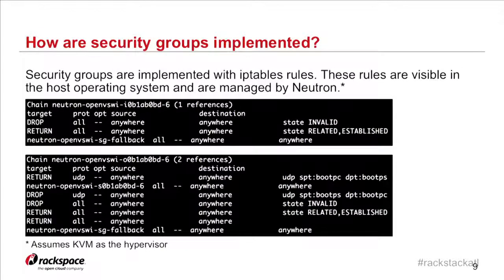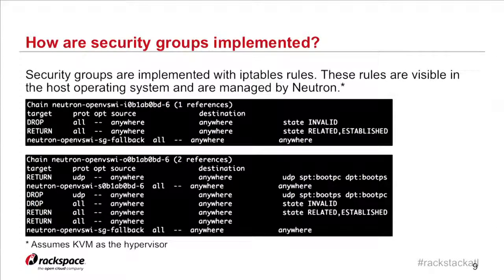Security groups are implemented, assuming you're using the KVM hypervisor, with IP tables rules on the hypervisor. You'll see these security group rules show up as individual chains for every single VM. Every VM on the hypervisor will have three chains. The top one starts with the letter I — this is where the ingress rules go. The bottom one starts with O — the outbound or egress rules. There is a third chain starting with S where the MAC address is added for outgoing packets so they have the appropriate source.